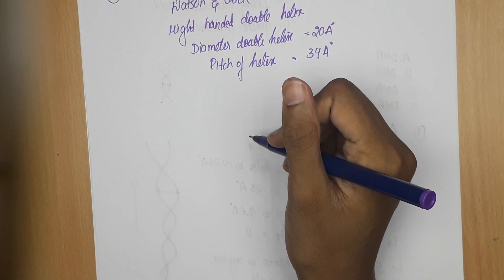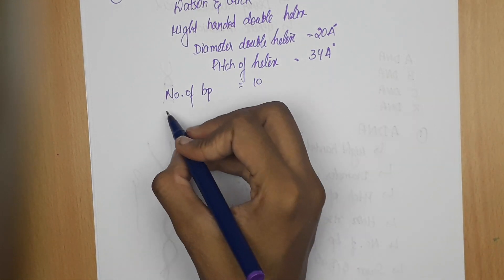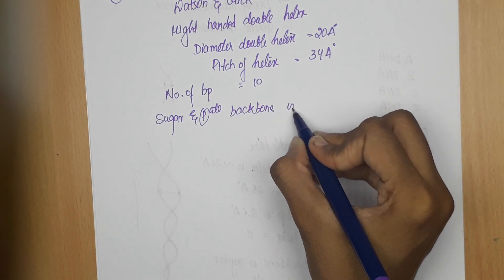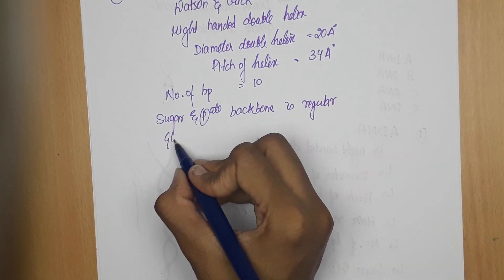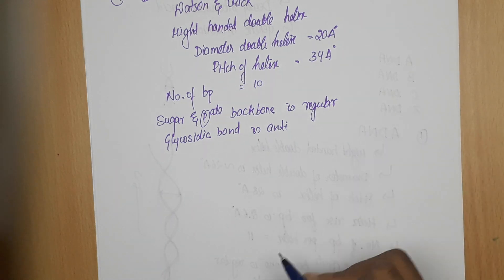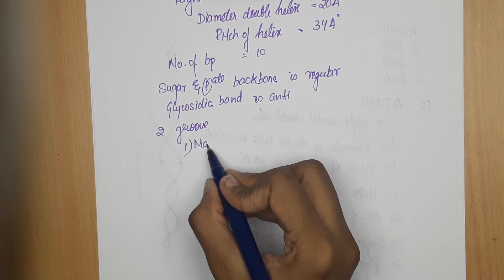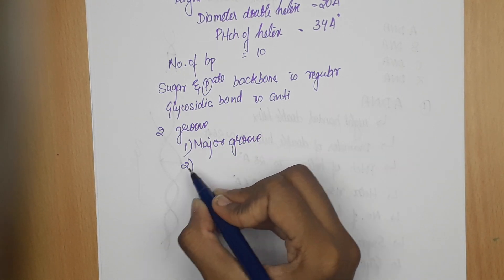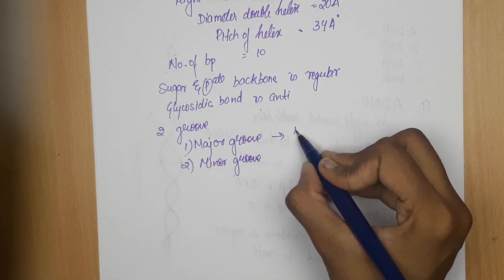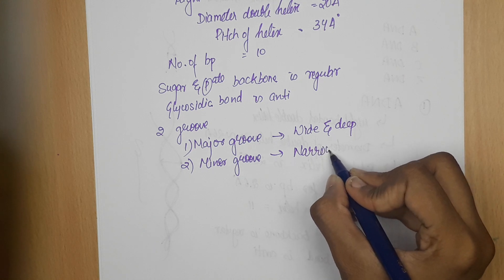The number of base pairs per helix in B-DNA is 10. The sugar and phosphate backbone is regular, and the glycosidic bond is anti for both purines and pyrimidines. It also has two grooves: the major groove is wide and deep, and the minor groove is narrow and deep.